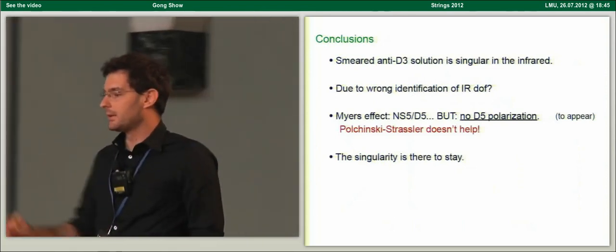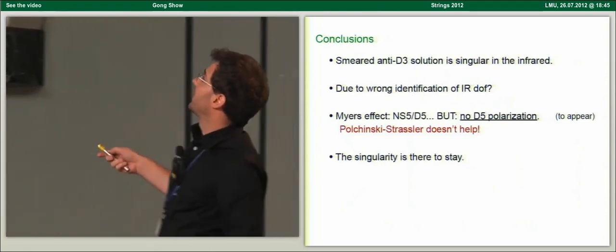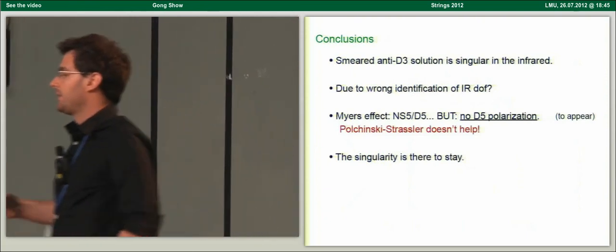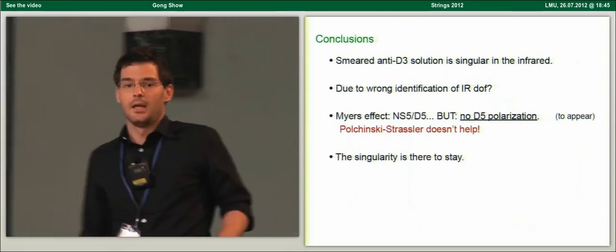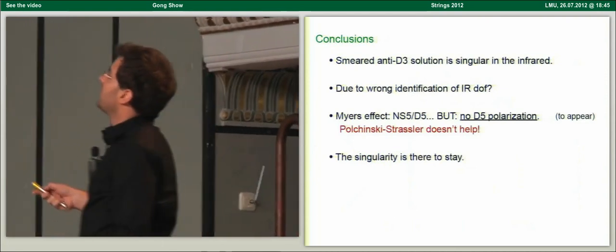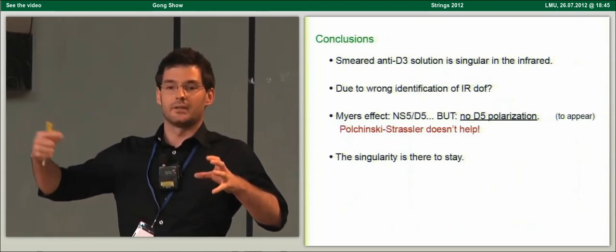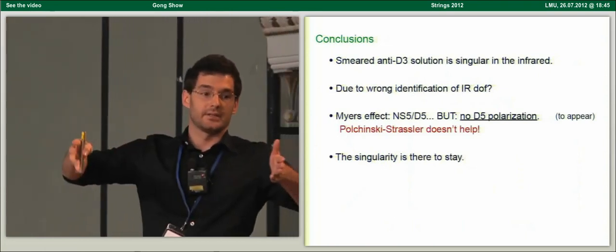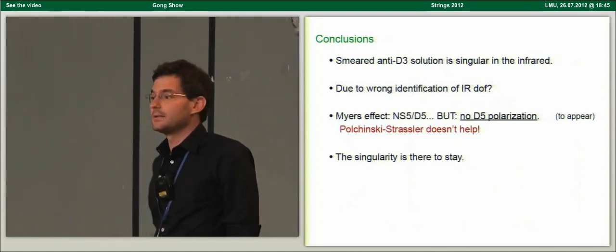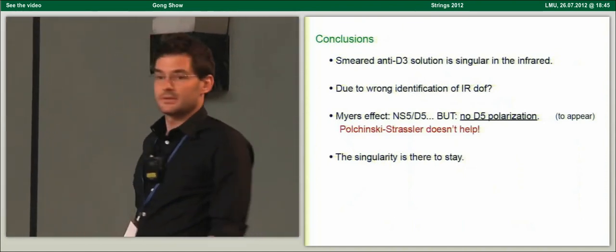However, we should ask if the singularity can be due to a wrong identification of infrared degrees of freedom. After all, we expect that they should polarize into an NS5 brane. Unfortunately, the smearing cancelled this NS5 channel. But in a fully back-reacted background, we expect there should also exist another channel in which the anti-D3 brane polarizes into a D5 brane, which wraps the shrinking two-sphere of the deformed conifold and sits at finite distance from the tip. We expect to detect this channel in the smeared solution, and indeed our singularities have the correct legs to polarize such a brane.